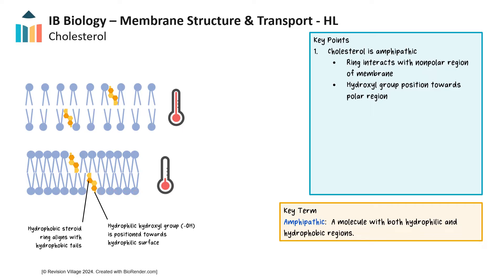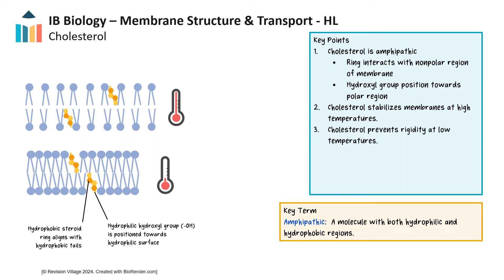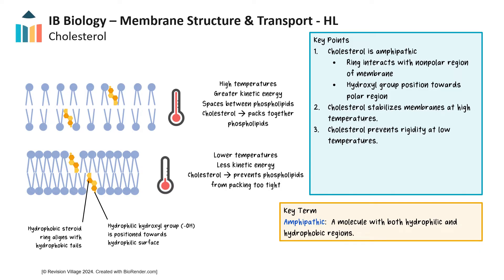Cholesterol plays a dual role. At high temperatures, it stabilizes the membrane by preventing excessive movement of phospholipids, thus reducing the fluidity. And at low temperatures, it has the opposite effect. At low temperatures, the phospholipids don't have a lot of kinetic energy, so they don't move around a lot, causing them to be packed tightly together. This tight packing causes the membrane's fluidity to be much lower. At high temperatures, the lipids have more kinetic energy and they move around more, creating more distance between the lipids, which increases fluidity in the membrane.